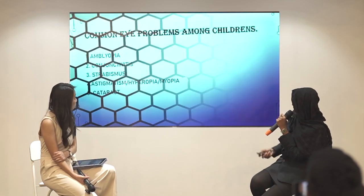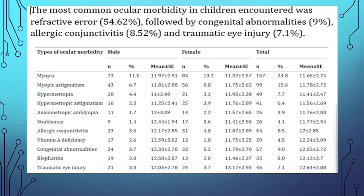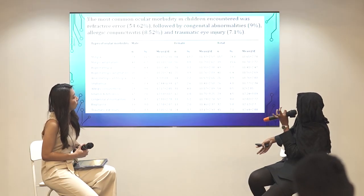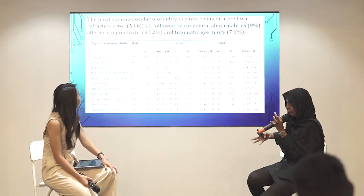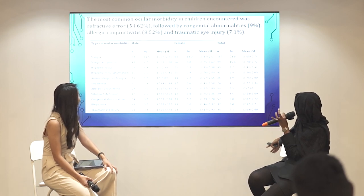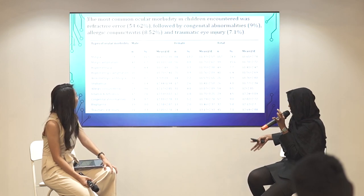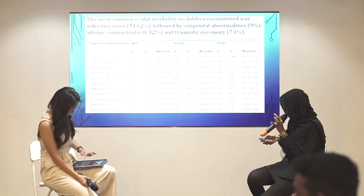This is based on an article by Edward and fellow researchers who did research about common ocular problems among children. They found that refractive error is more prevalent in children, followed by congenital abnormalities like cataracts, strabismus, and allergic conjunctivitis.